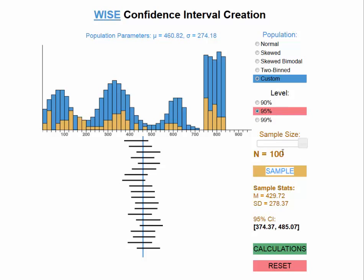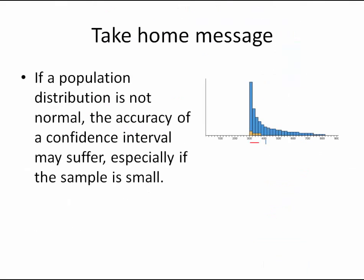With a very large sample, you can get away with more than you can with a small sample. The take-home message: if a population distribution is not normal, a confidence interval may not be very accurate — especially with small samples. But even with large samples, we can see a degree of bias when there is a departure from normality.